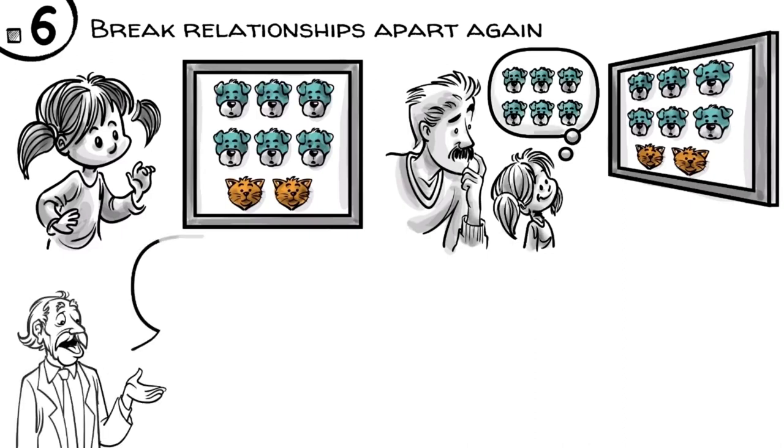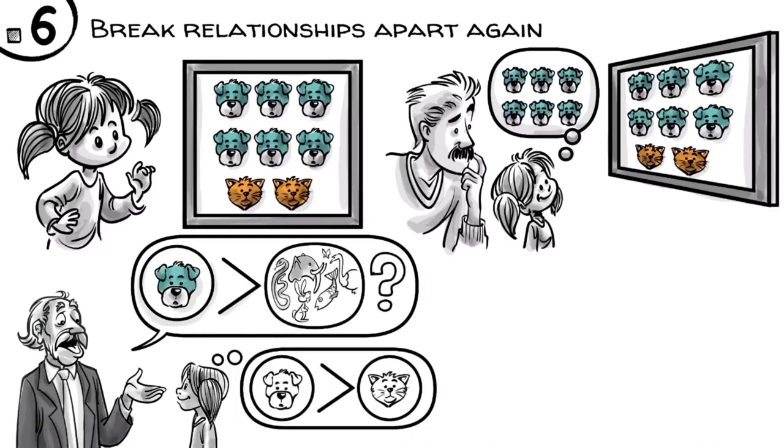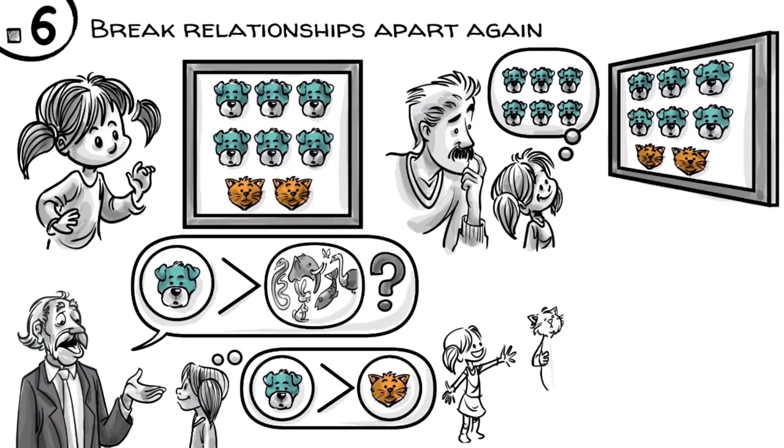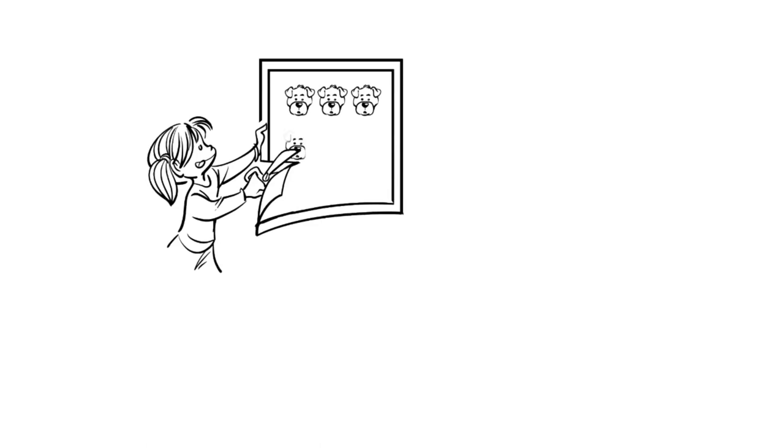In other words, if you ask, are there more dogs or more animals, the child hears, are there more dogs or more cats? At age five, most kids didn't practice enough math to break hierarchical relationships apart while still remembering the whole. This happens because once the child has to cut the whole into parts, for them, at that moment, the whole no longer exists.